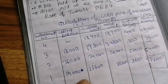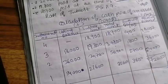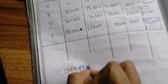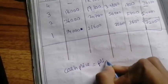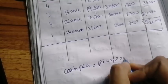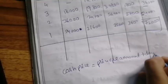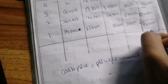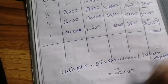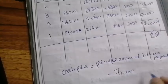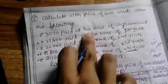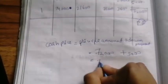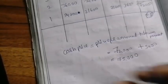The first year opening balance of 72,000 is the principal amount. Now we calculate cash price using the formula: cash price equals principal amount plus down payment. The principal amount is 72,000. Down payment is 3,000. So cash price equals 72,000 plus 3,000 equals 75,000. That is the cash price of the asset.